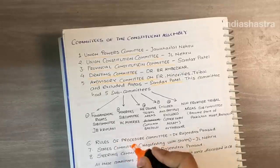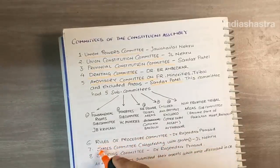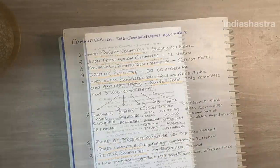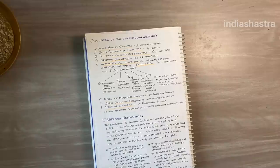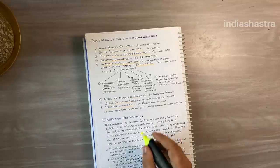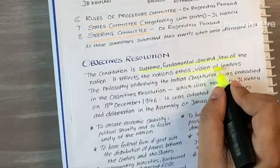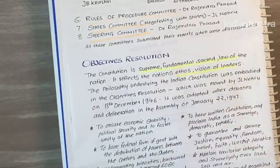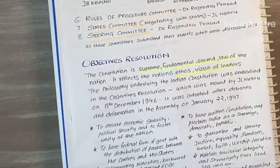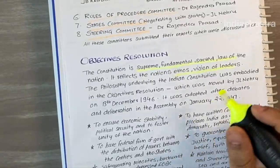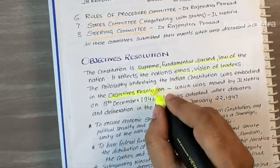All these committees submitted their reports which were discussed in the constituent assembly. The constitution is the supreme, fundamental, sacred law of the nation. It reflects the nation's ethos and the vision of its leaders who participated in the Indian national movement. The philosophy underlying the Indian constitution was embodied in the objectives resolution.